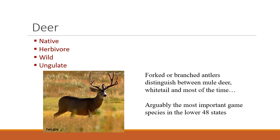Deer can be distinguished by the type of antlers they have. Generally, mule deer have branched antlers that keep branching as they go out, whereas white-tailed deer have sort of a main branch. But that's not the main difference — more likely you should look for the white tail on white-tailed deer and some of the facial markings.